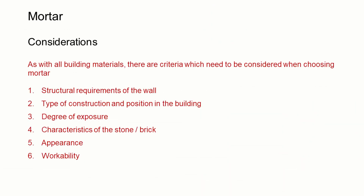As with all building materials, there are criteria which need to be considered when choosing mortar, and there are six for mortar: the structural requirements of the wall, the type of construction and position within the building, how exposed it's going to be, what type of material we're dealing with, what we want it to look like, and the workability of it.